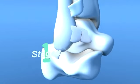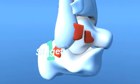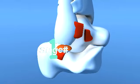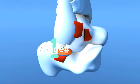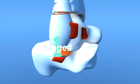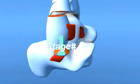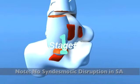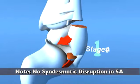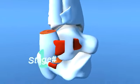A rupture of the lateral collateral ligaments, an avulsion fracture of the lateral malleolus, or a transverse fracture of the distal fibula below or at the level of the ankle joint. Note that the syndesmotic ligaments are not involved with supination adduction injuries.